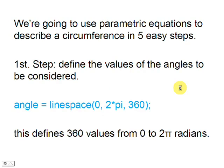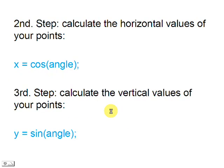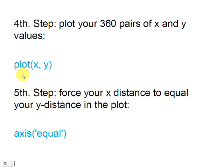We need five steps. The first one is to define the values that we want to consider. With this line of code we have 360 values going from 0 to 2pi. The second step is to calculate the horizontal values of all of the 360 angles that we are considering. The third step is to calculate the vertical values of the points that we are going to plot.